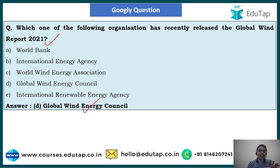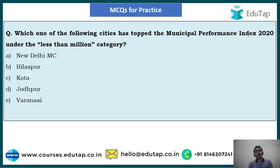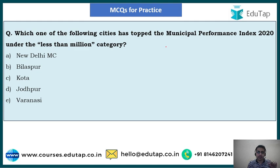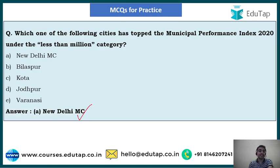The Global Wind Energy Council and the Global Wind Report 2021 are the key keywords from that question. Next question: Which one of the following cities has topped the Municipal Performance Index 2020 under the less-than-million category? Options: A) New Delhi Municipal Corporation, B) Bilaspur, C) Kota, D) Jodhpur, E) Varanasi. The right answer is option A — New Delhi Municipal Corporation.